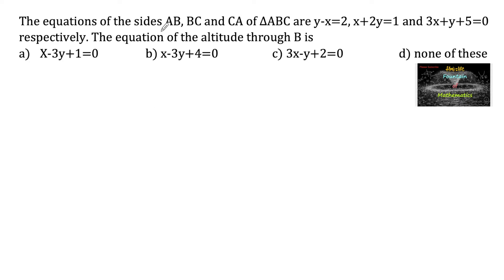The equations of the sides AB, BC, and CA of triangle ABC are given: y minus x is equal to 2, x plus 2y is equal to 1, and 3x plus y plus 5 equals to 0 respectively. Then find the equation of the altitude through B.